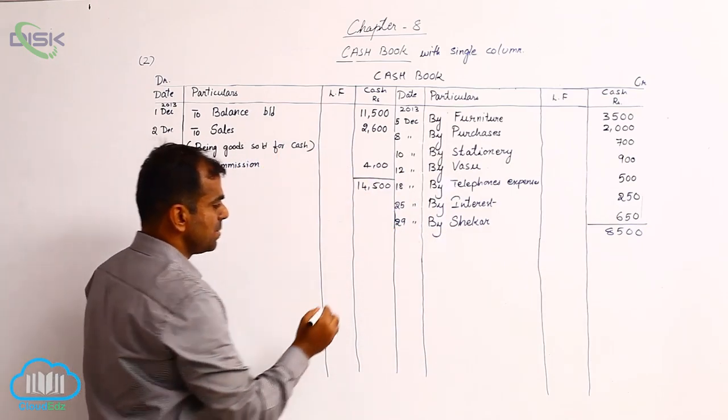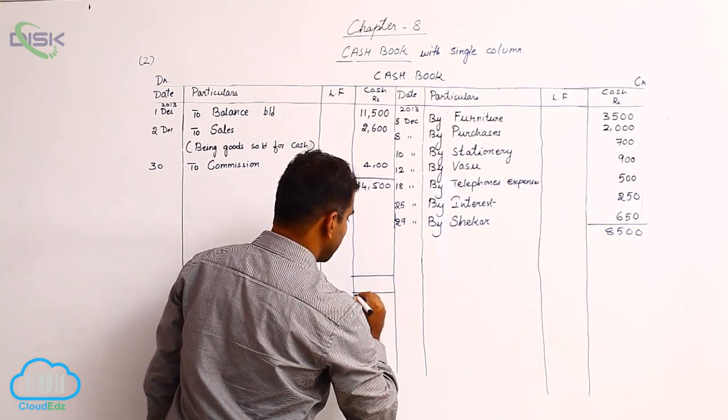14,500 is more. So write this total on both sides to balance it.